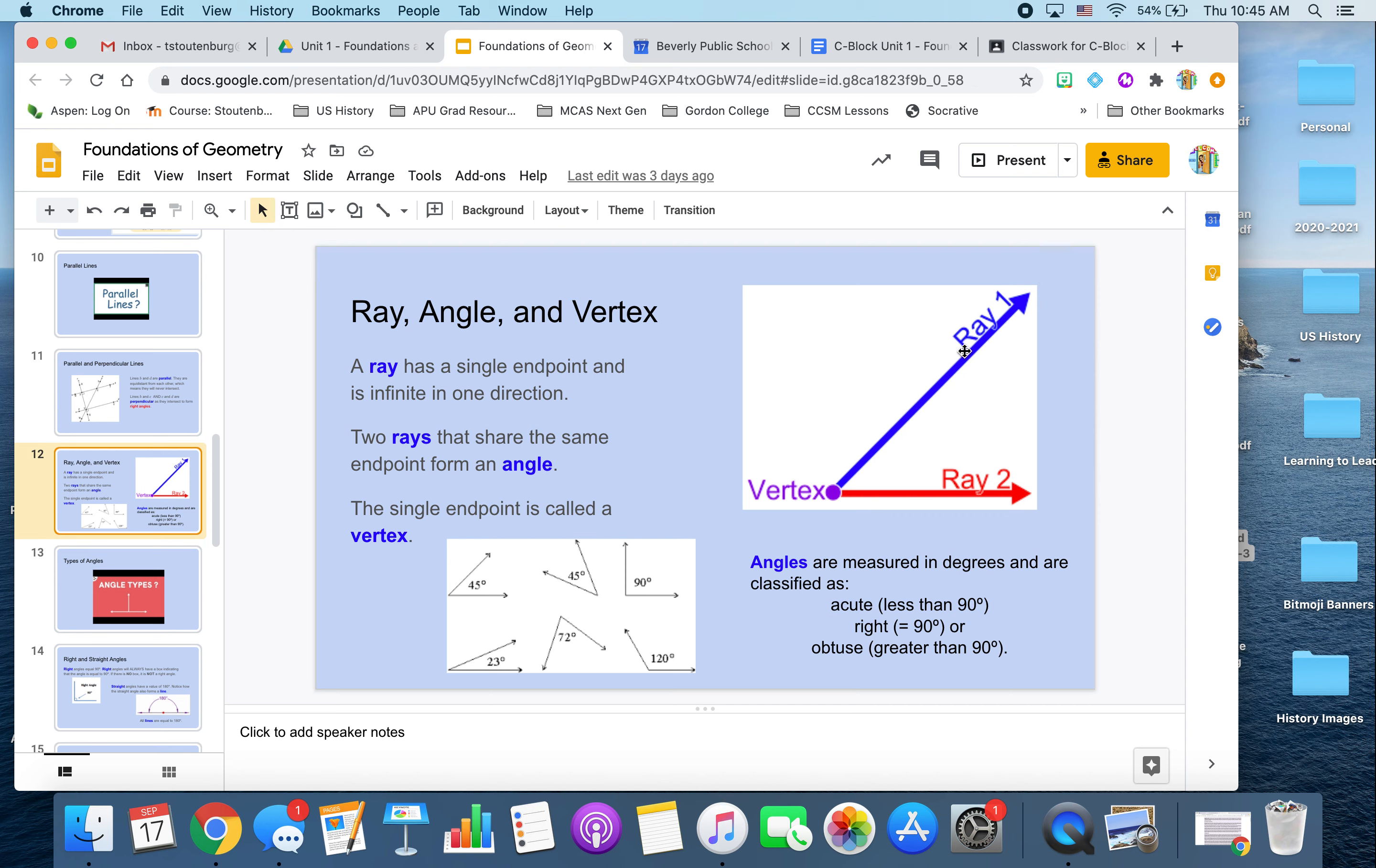So we have ray 1 here in blue, and then we have a second ray here in red, both with the same end point. Now, when we bring those two rays together, when they share that single end point, we call that a vertex. And when we bring those two rays together with the single end point, what we form is an angle.